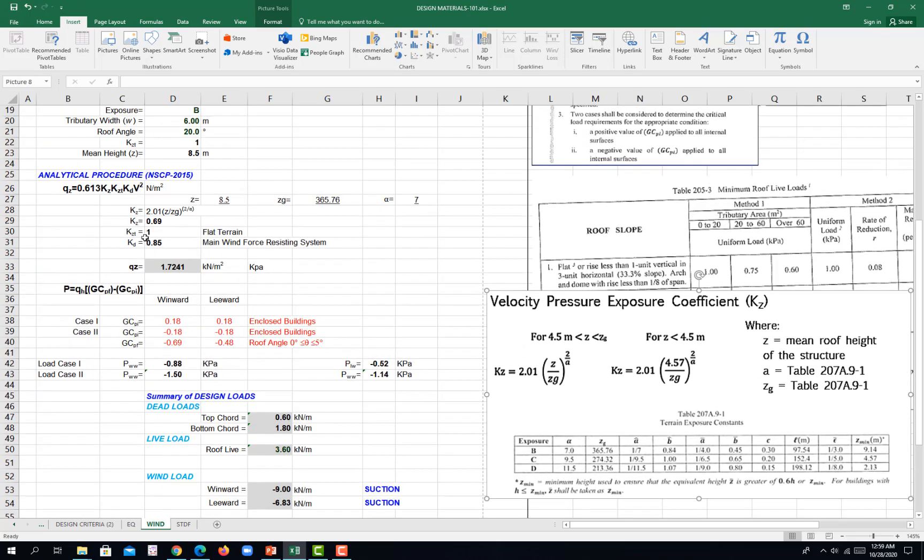And then KZT is equivalent to 1, assuming a flat terrain. And then KD, based on the type of your structure being MWFRS, that would be 0.85. So come up with this formula, you have this value 1.7241 kN per square meter or kilopascal.